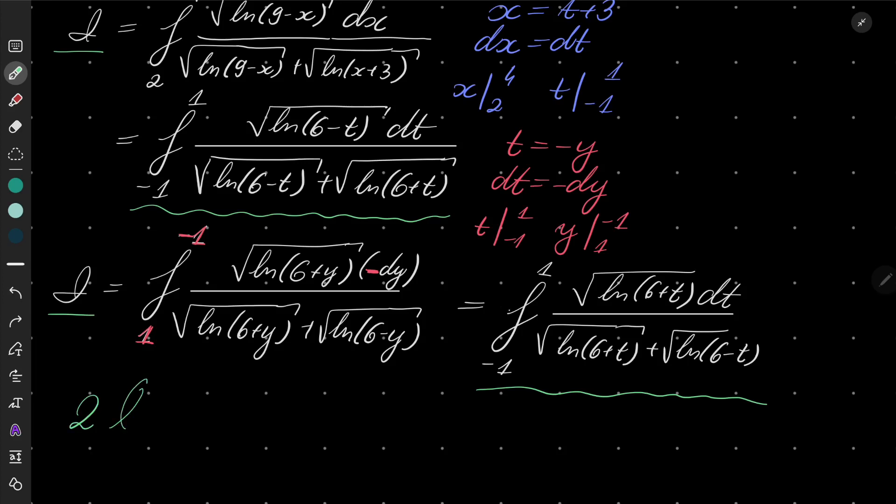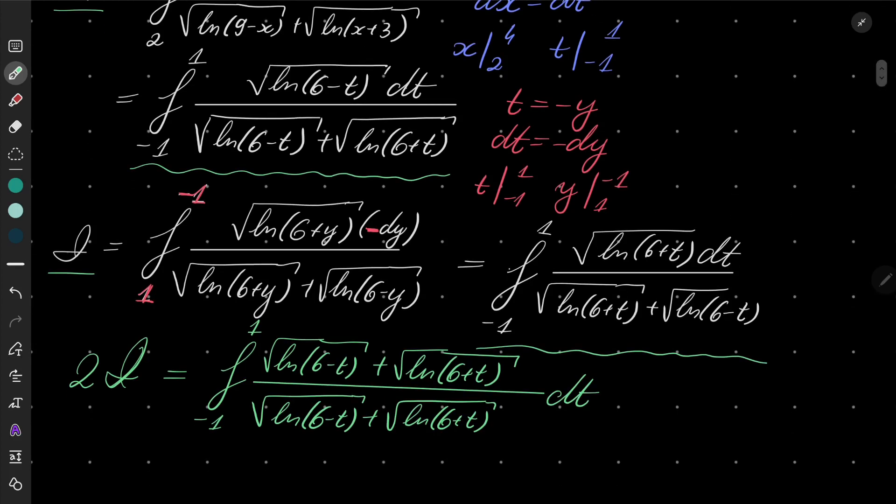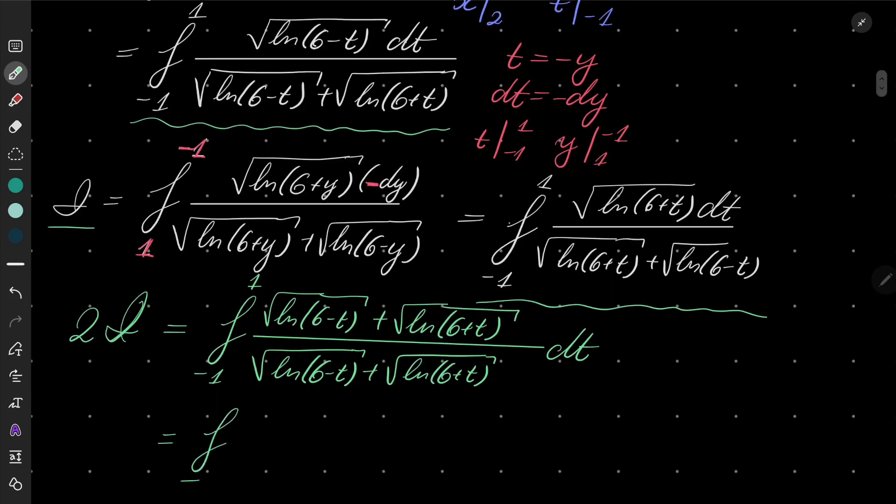And we will get two times our integral is the integral from minus 1 to 1. And now let's combine this numerator and this numerator. And if you look closely, you can see that the denominator and the denominator are the same. So it's just the integral from minus 1 to 1 of 1.